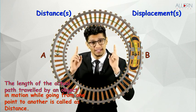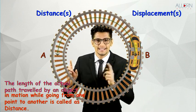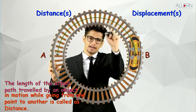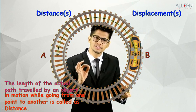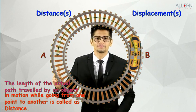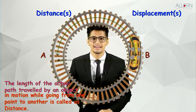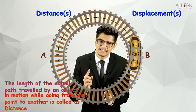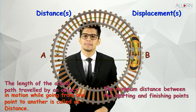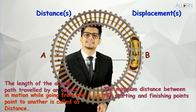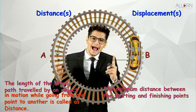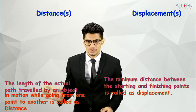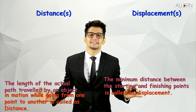Now let us understand displacement with the same example. The train started from point A and reached point B taking the curved path. But what is the shortest path between A and B? It is a straight line. This straight line is the shortest distance, and this is what is called displacement. So the minimum or shortest distance between the starting and finishing points is called displacement.